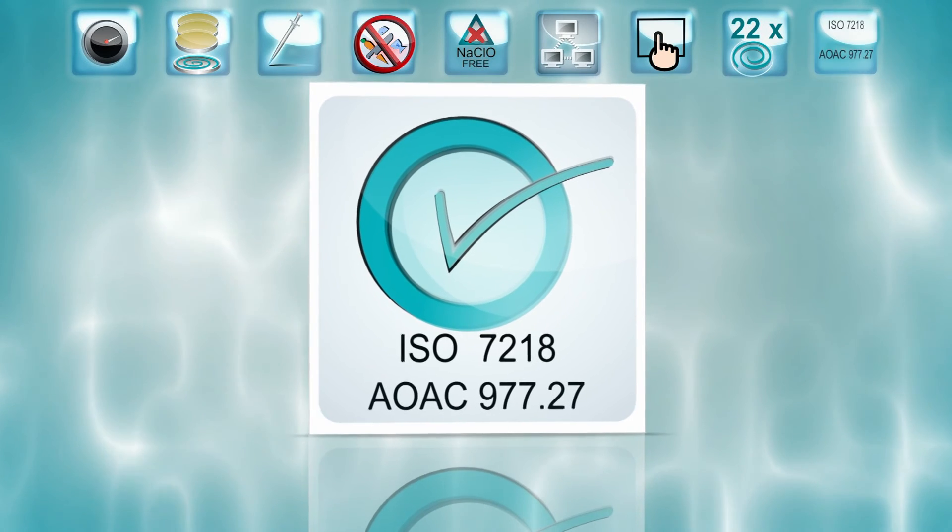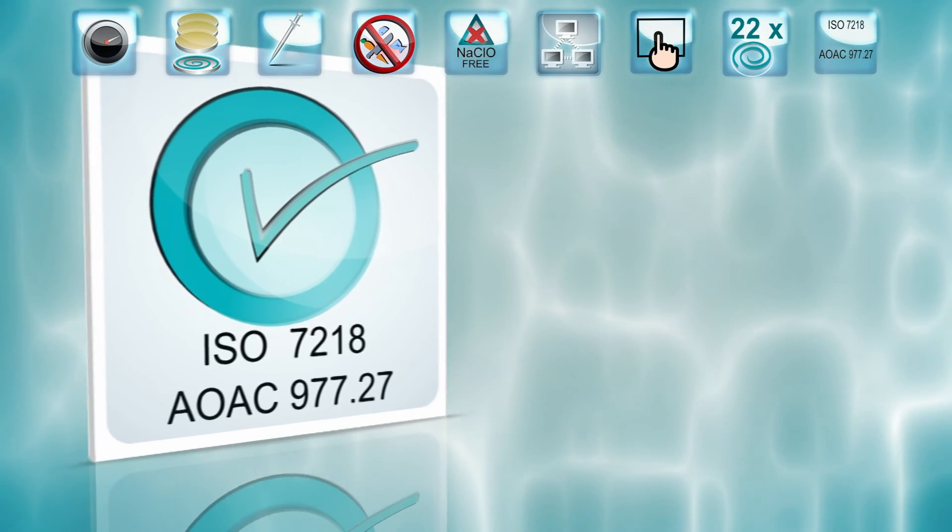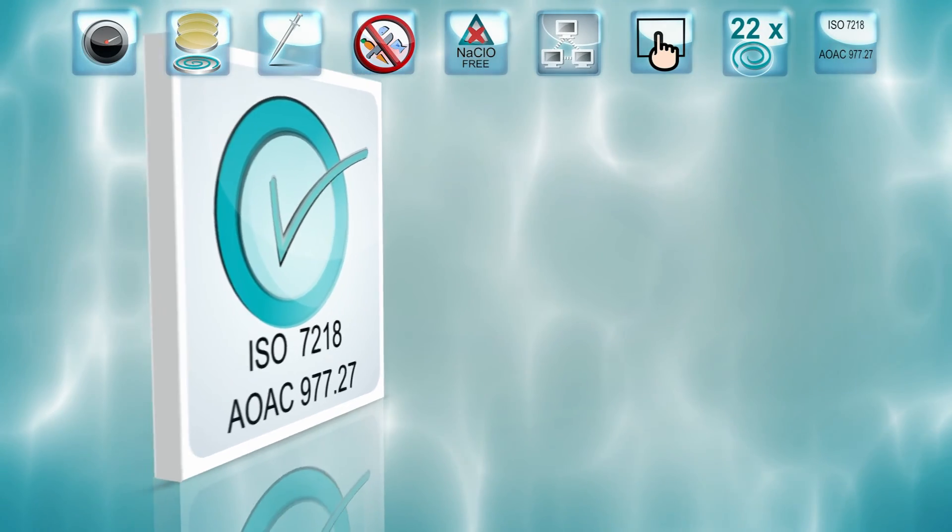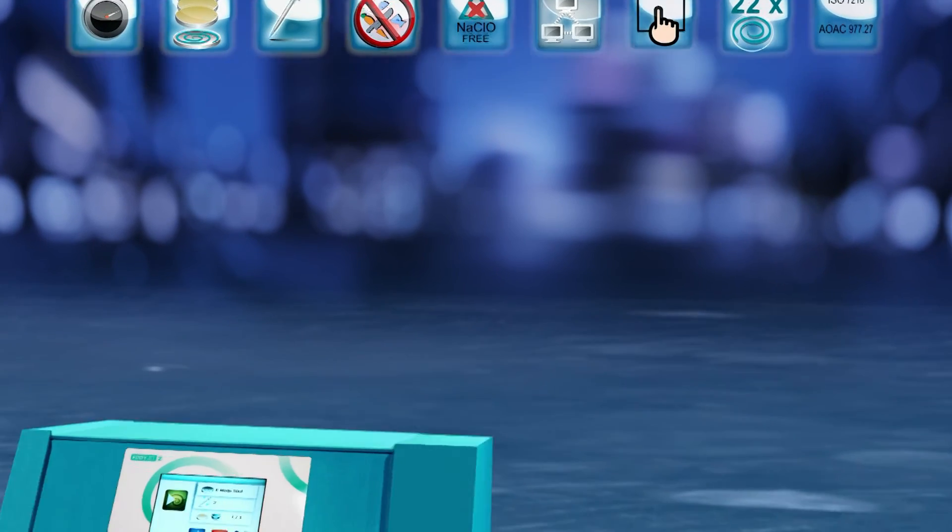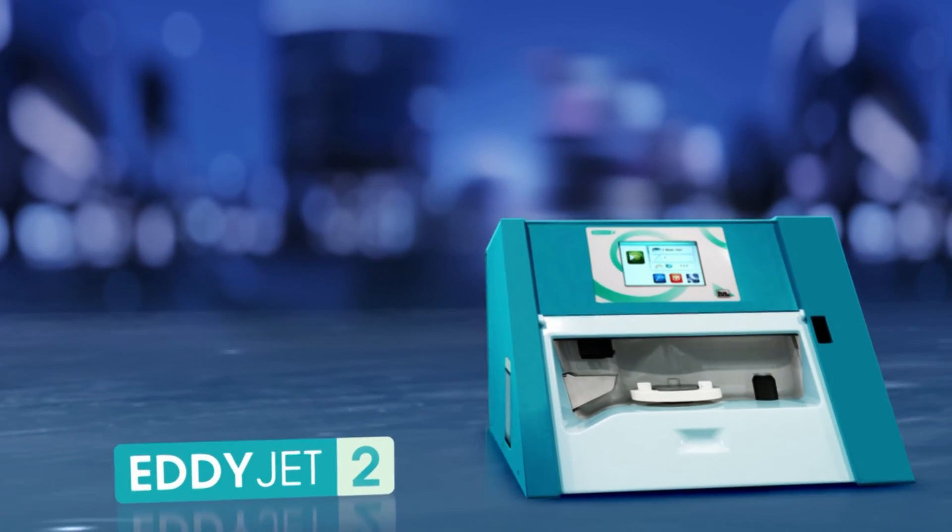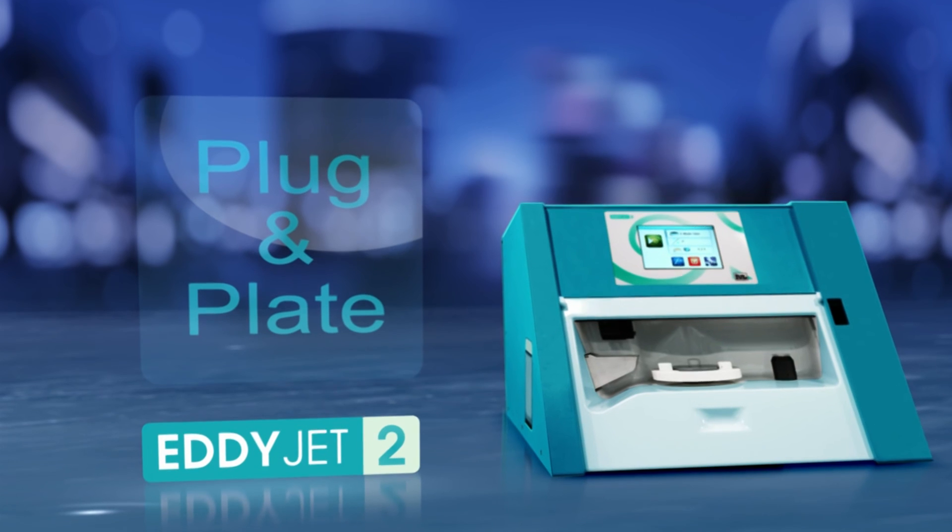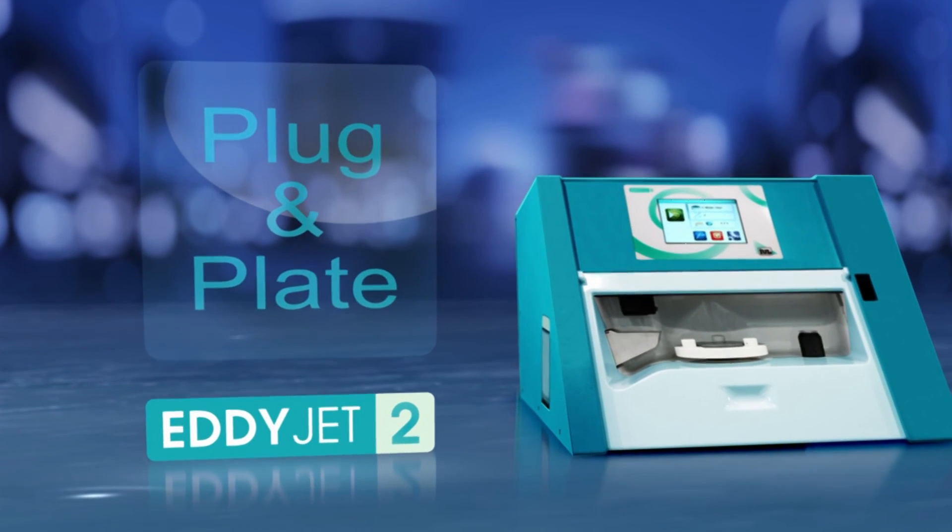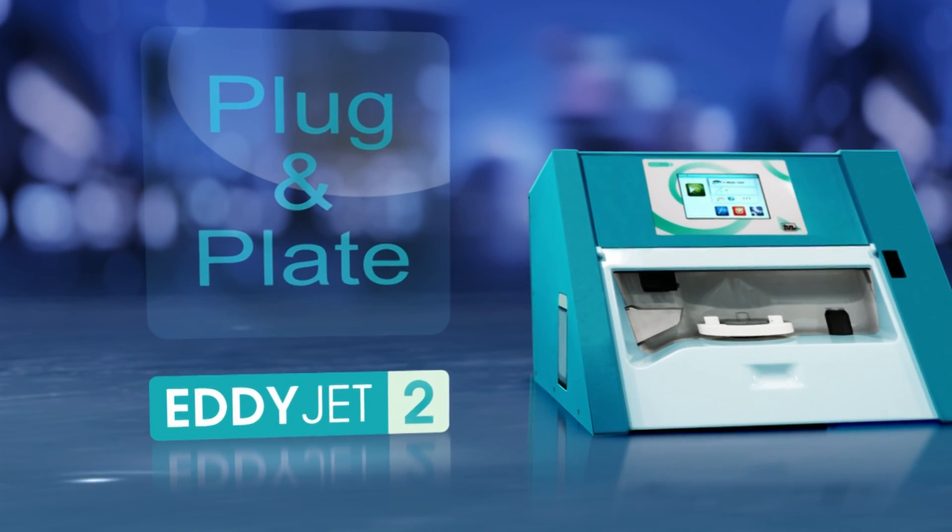Spiral plating is an ISO and AOAC-validated microbiological method. Sterility, a streamlined workflow, user-friendliness, and speed make EDIJA II the most productive spiral plater.